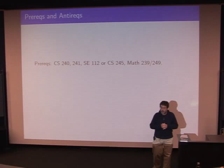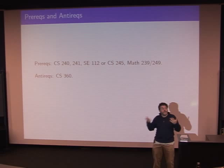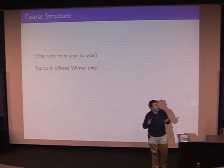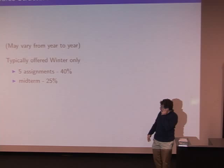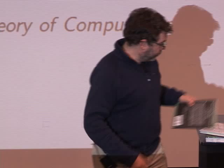Prerequisites for CS365 are CS240, CS241, CS112 or CS245, Math 239, and Math 249. You wouldn't take it alongside CS360. It's typically offered only in the winter. When I've taught it, there have been five assignments worth 40%, a midterm worth 25%, and a final exam worth 35%. The textbook used is Sipser's Introduction to the Theory of Computation.